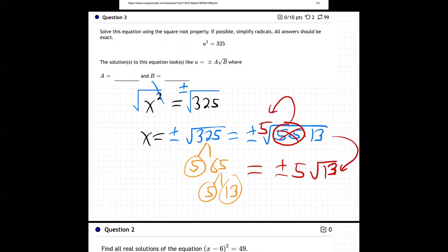And what do they want? They said it's plus or minus a root b. That's how they wrote it. So then a is five and b is 13. That's what we're identifying. And there we go. 13.